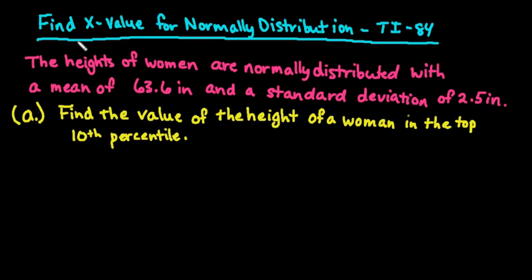Hi, for this video we're going to find an x-value for a normally distributed population. In this case, we're going to use the TI-84 graphing calculator. The graphing calculator does make this much quicker than using the table. I will put down the formula in case you are using the table or you need to use the table.